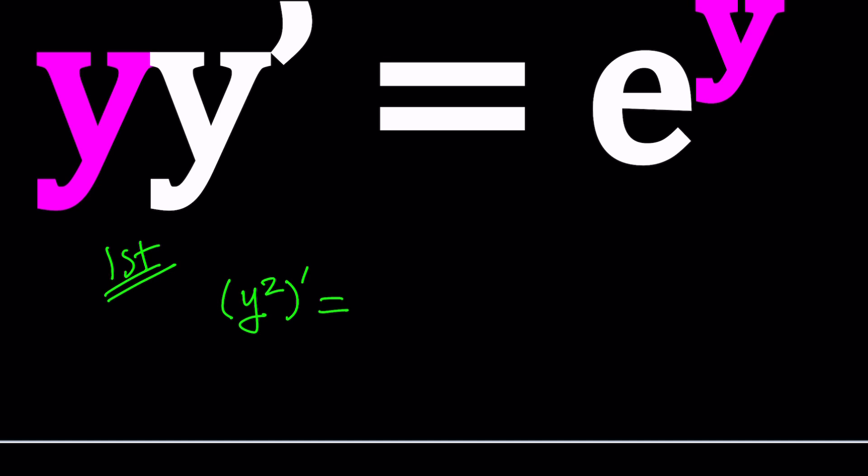To be able to differentiate something squared, you need to use the power rule, bring the two to the front, and reduce the power, so it becomes 2y. But because y is a function of x, most of the time, right? Then you need to multiply by the derivative of y, which comes from the chain rule. We also call that the derivative of the inside.